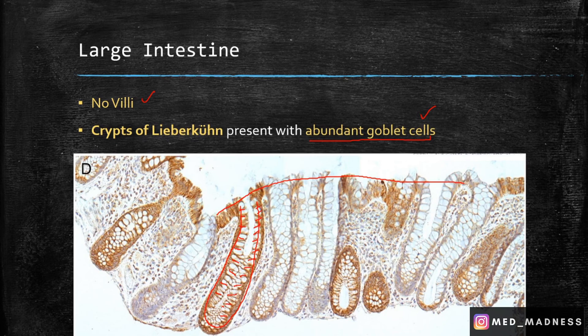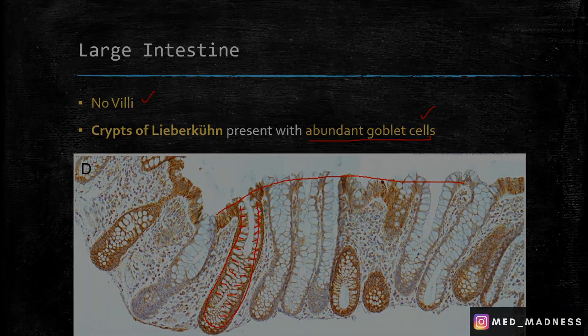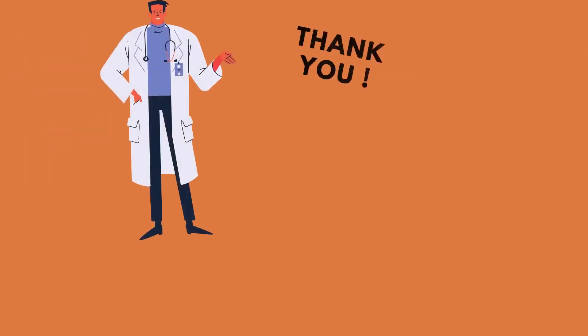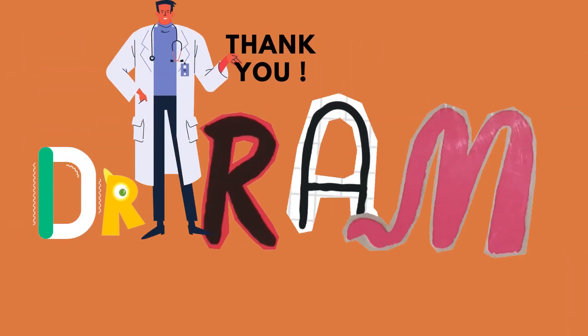The take-home points: in the small intestine, there is presence of villi; in the large intestine, there is no villi. In the duodenum, you can see Brunner's glands in the submucosa; in the ileum, Peyer's patches are present in the lamina propria and submucosa. Thank you — see you with more interesting videos.